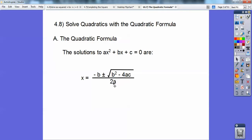Easy to memorize, right? How about this, you guys, a little jingle here. x equals opposite b plus or minus square root b² minus 4ac all over 2a.